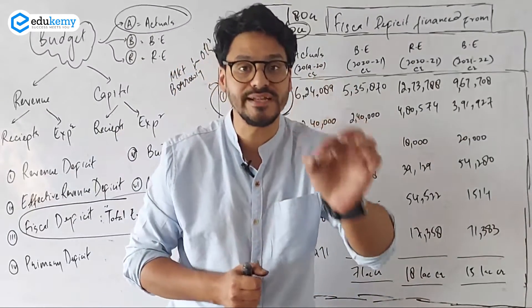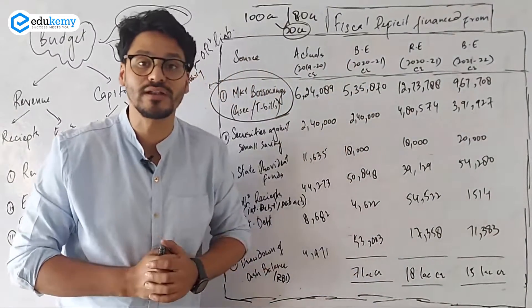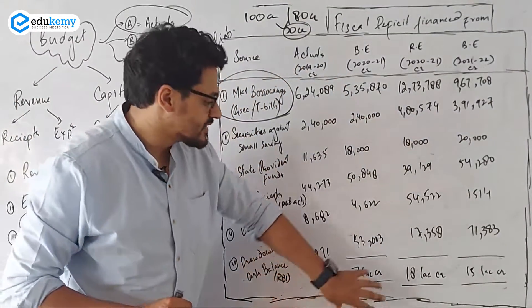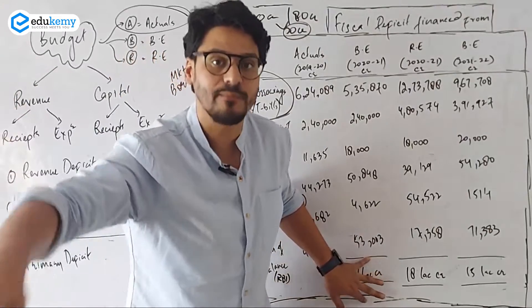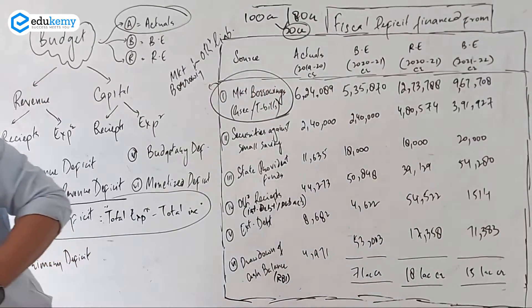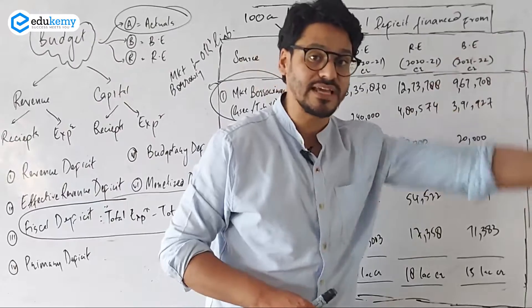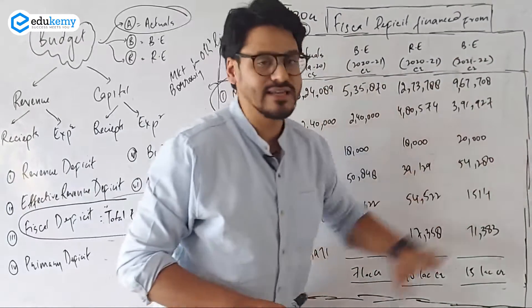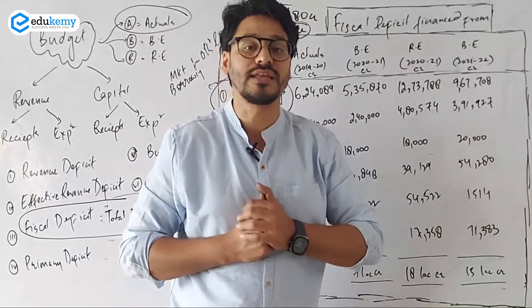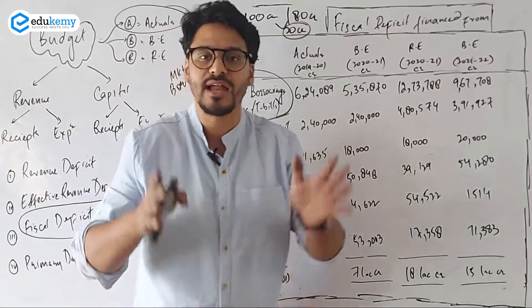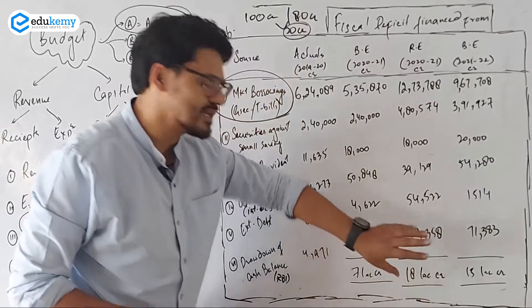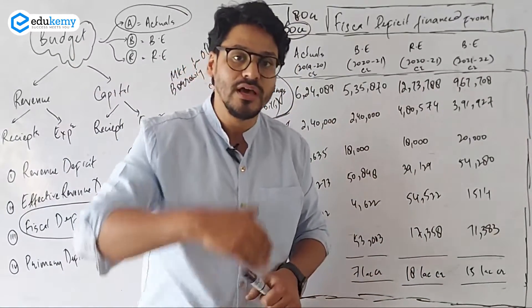The budget estimate was around 7 lakh crore but when it was revised, the revised estimate came to 18.4 lakh crore — that was last year's deficit. For the next year's budget, how much is planned to be borrowed? The next year's budget estimate is 15 lakh crore. These specific numbers — 15, 18, 7 — are not important; you just need to know the trend.